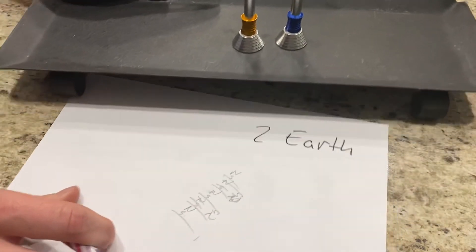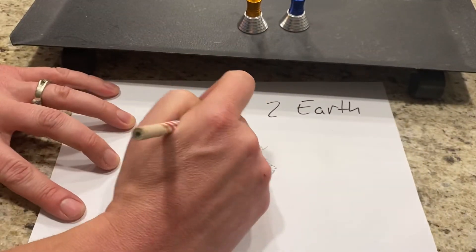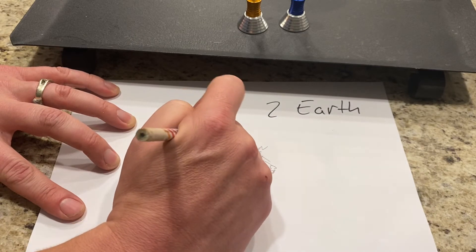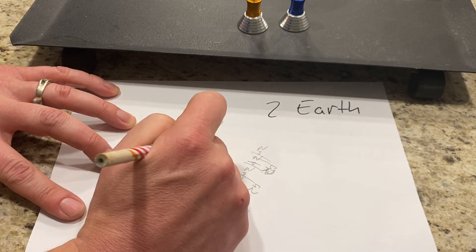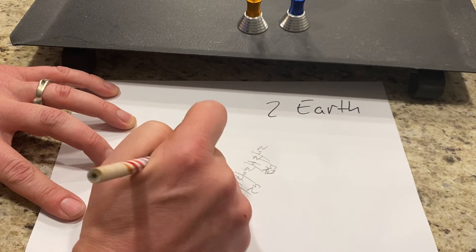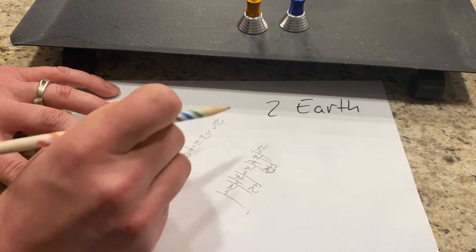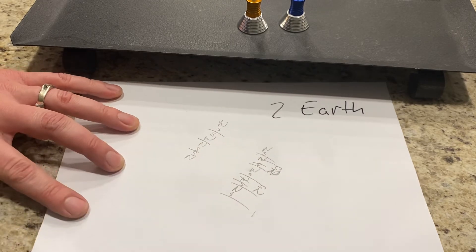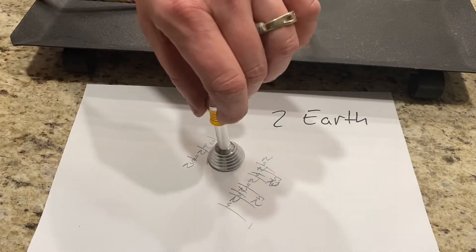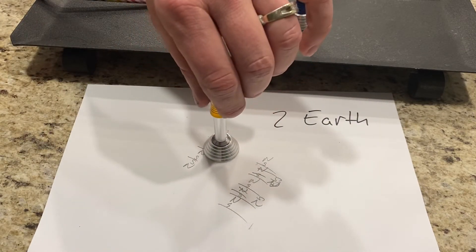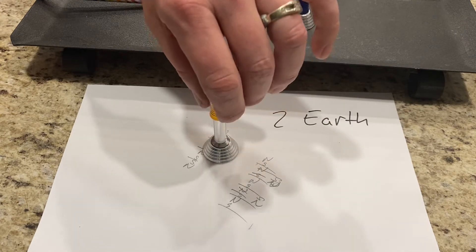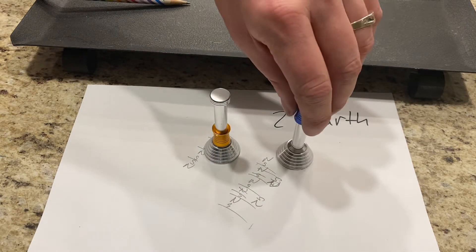So with the magnets in north, south, south, north, north, south, south, north. That's where it produces some type of eddy current that slows the resistance down.